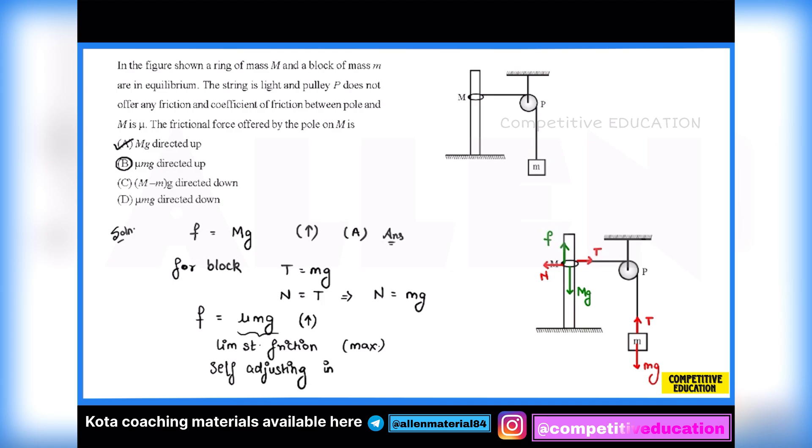It adjusts itself such that the block or this ring remains stationary. So this value is the maximum value; we cannot comment if it will be applied or not. But as this ring is stationary, then we can surely or certainly say that friction equals capital Mg. That is why my correct answer is A, not B. I hope you have understood this problem and this misconception must be cleared. Thank you very much.